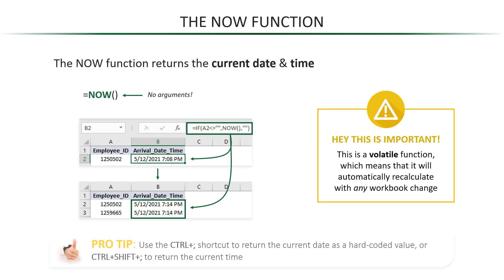An alternative is to use the Control+Semicolon and Control+Colon shortcuts to hard-code the current date and time in the cells. But this isn't a very automated solution.